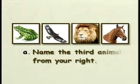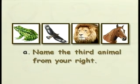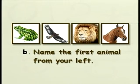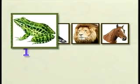Look at the diagram. A: Name the third animal from your right. The third animal from your right is the bird. B: Name the first animal from your left. The first animal from your left is the frog.